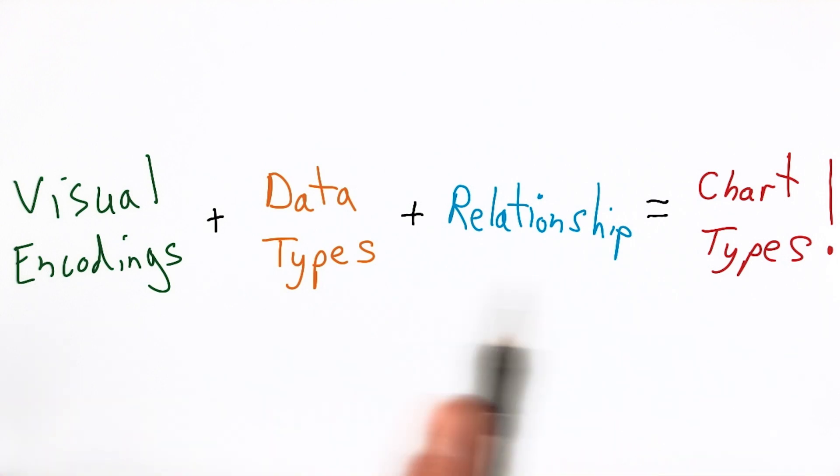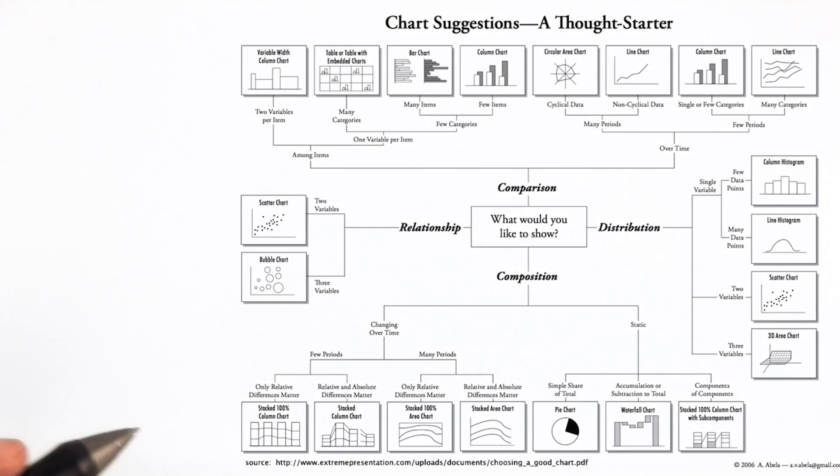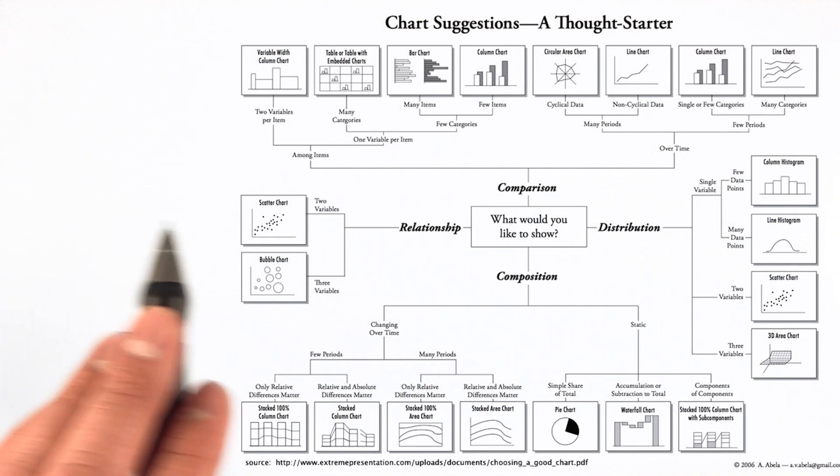As you can imagine, there are quite a few combinations of these three sets: the set of visual encodings possible, the set of data types possible, and the set of relationships between your data types. I think this flow chart does a fairly good job of categorizing the different chart types by utility.